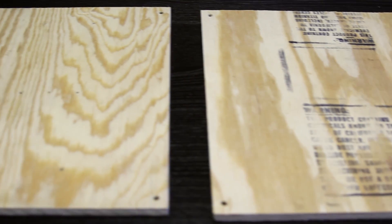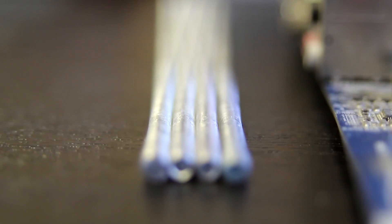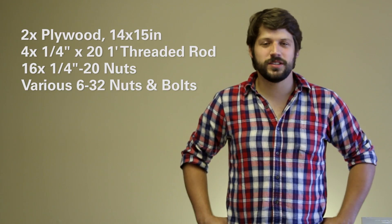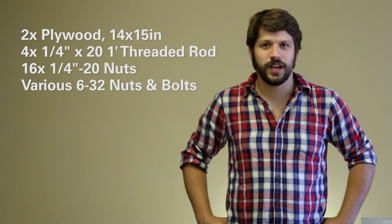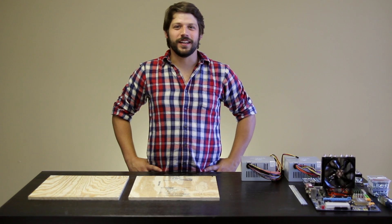Here's what you'll need: two pieces of plywood 14 by 15 inches, four quarter by 21 foot long pieces of threaded rod, 16 quarter by 20 nuts, and various amounts of 6-32 nuts and bolts. And besides a drill and a screwdriver, that's all you need. Alright, let's get started.